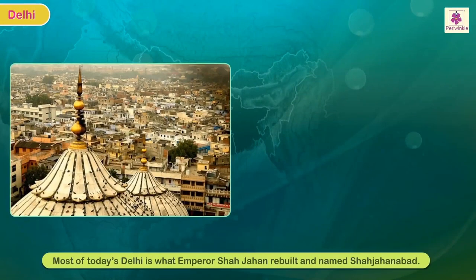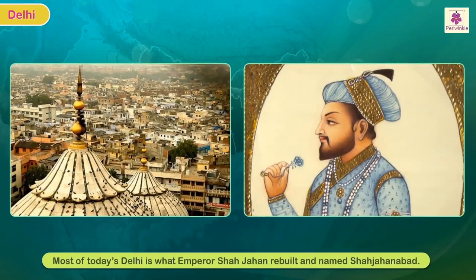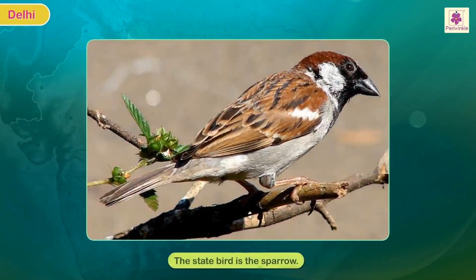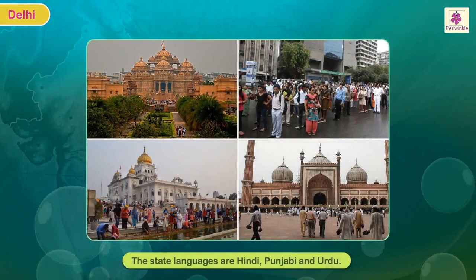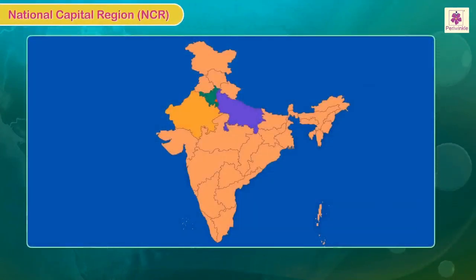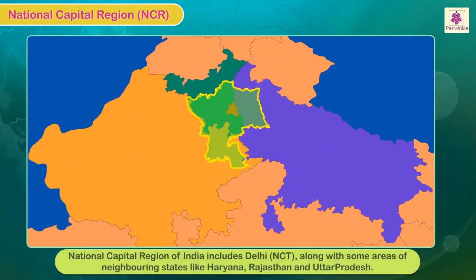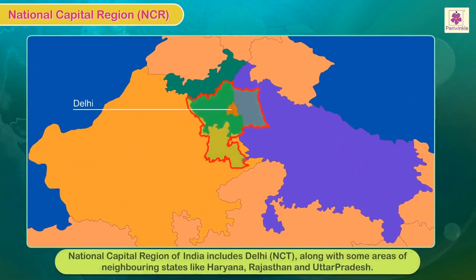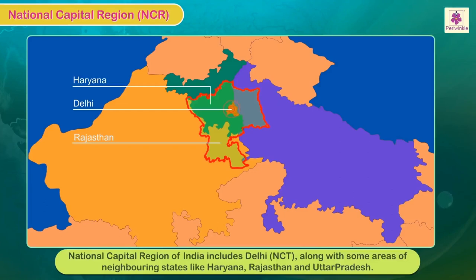Most of today's Delhi is what Emperor Shah Jahan rebuilt and named Shahjahanabad. The state bird is the sparrow, and the state languages are Hindi, Punjabi, and Urdu. The national capital region of India includes Delhi NCT along with some areas of neighboring states like Haryana, Rajasthan, and Uttar Pradesh.